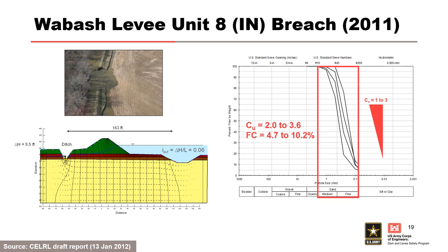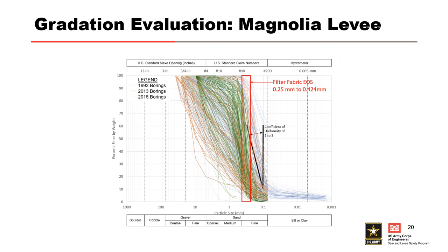A backward erosion piping failure mode initiated at Wabash Levee Unit 8 in an excavated landside ditch. At the time of failure, the White River was experiencing water levels equivalent to a seven-year flood event, which was not at a significant level compared to previous historic events — currently listed as the 13th highest. Two borings were drilled on either side of the breach, and gradations from the first two samples immediately below the roof forming material had coefficients of uniformity ranging from 2.0 to 3.6. Data preparation for BEP involves gradation data evaluation along with site characterization, geomorphology, and levee performance.